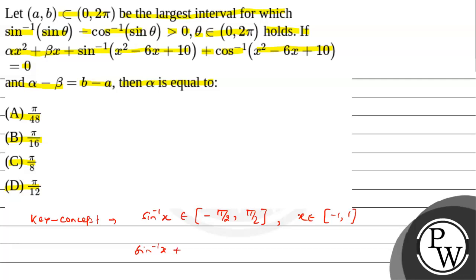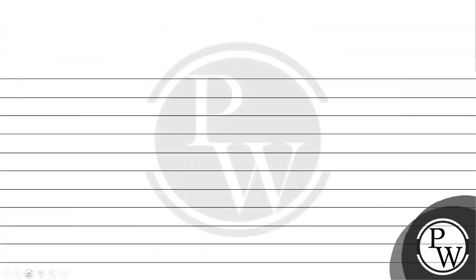And sin⁻¹(x) + cos⁻¹(x) = π/2. Now we will solve the problem solution given.